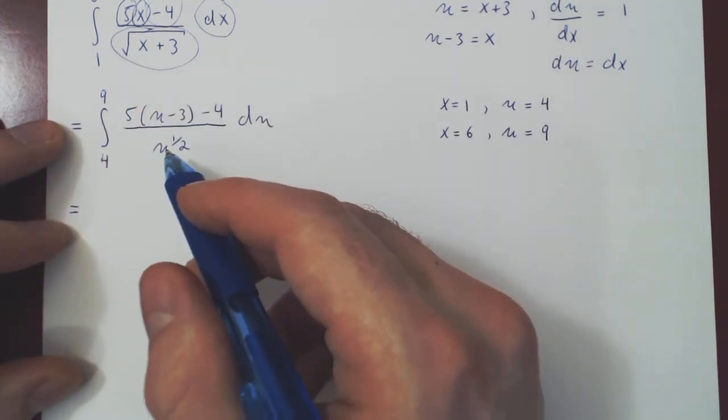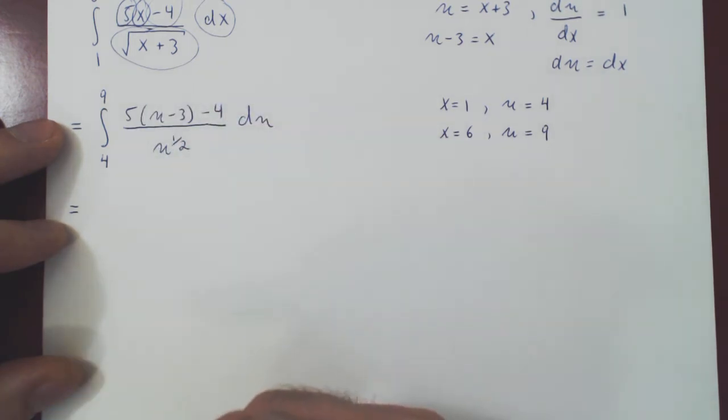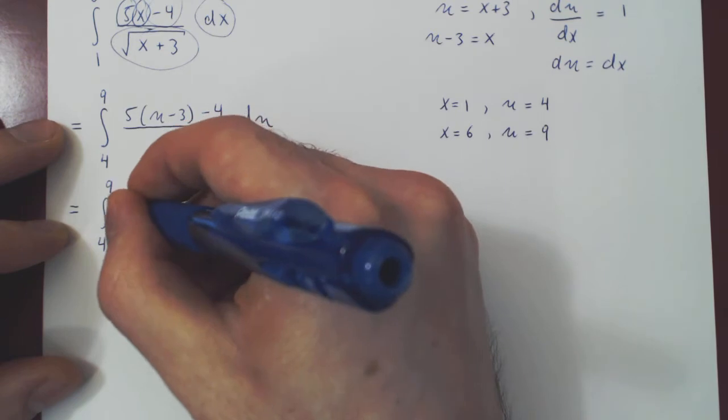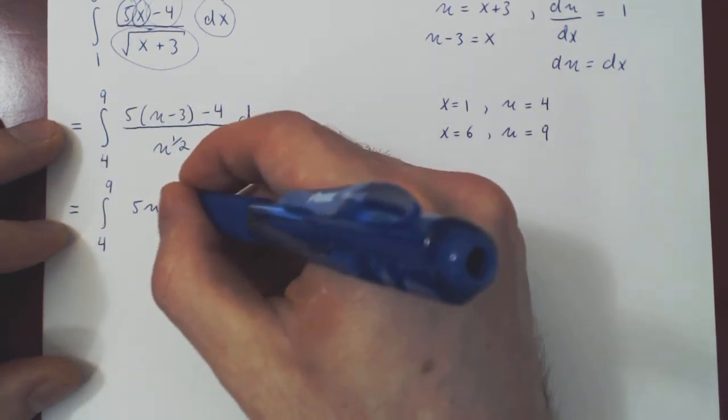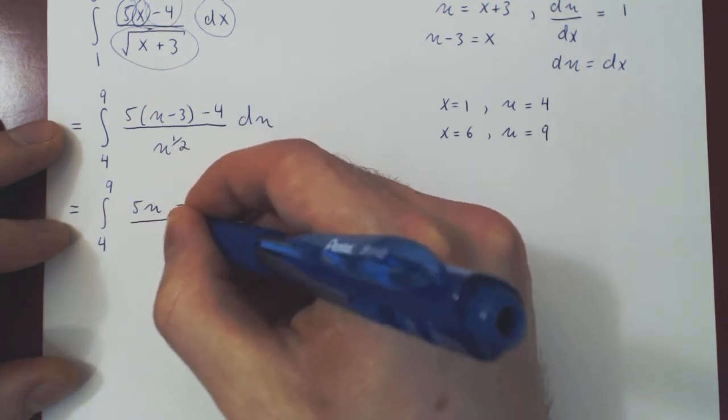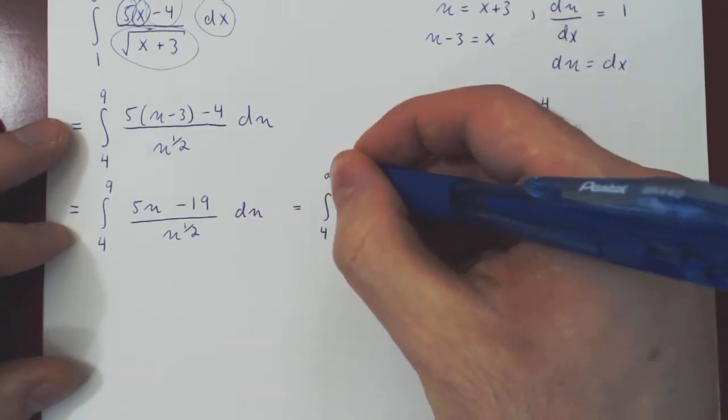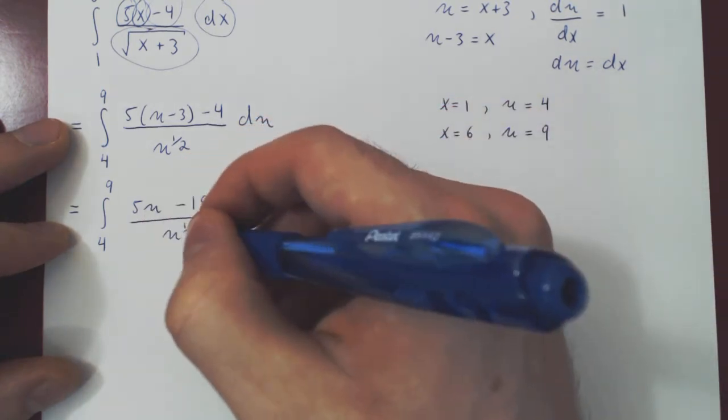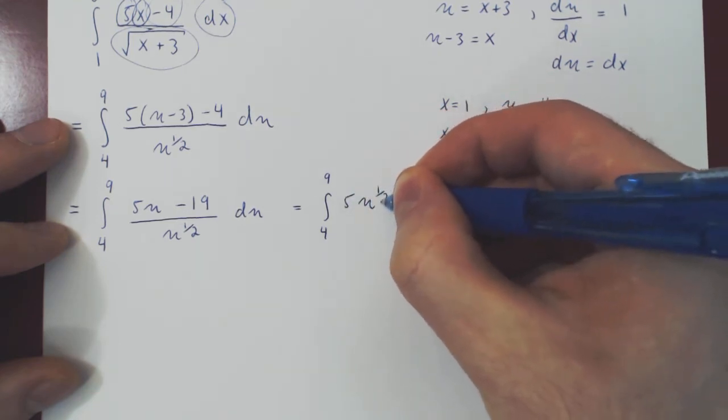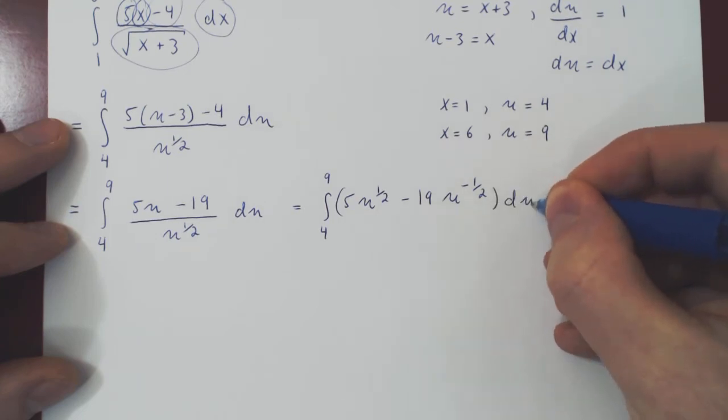So everything in terms of x, we've replaced in terms of u. Now we're good to go. We'll never have to go back in terms of x, we'll just evaluate this. And if you see, the problem has disappeared. We are no longer dividing by the square root of a sum of two terms, but just the square root of one variable. So we'll be able here to divide through and use the power rule on each term. If you multiply out, you'll have 5u on top, minus 15, minus 4, minus 19, over u to the 1 half du. Now we can divide through.